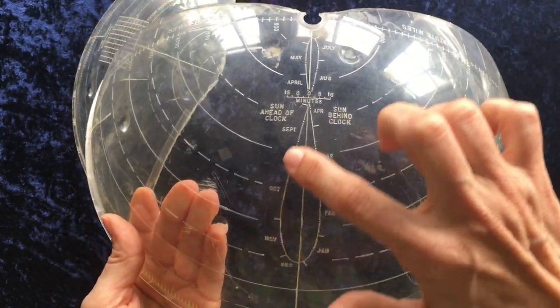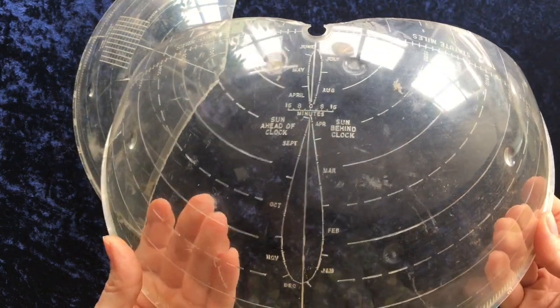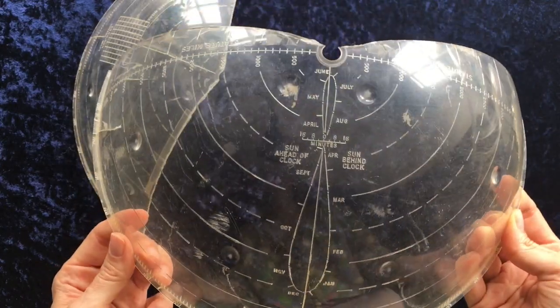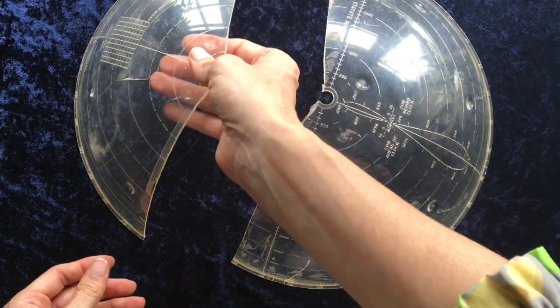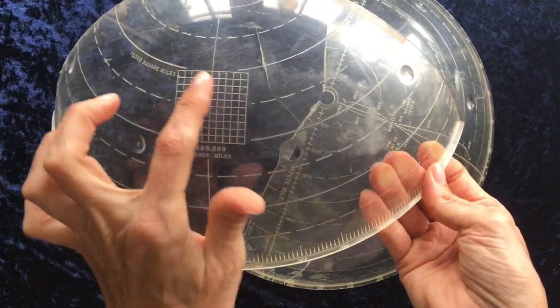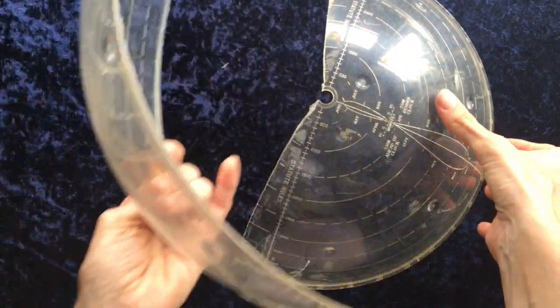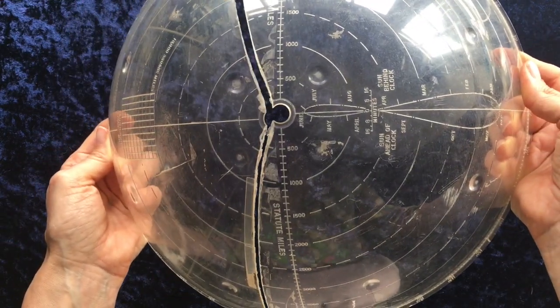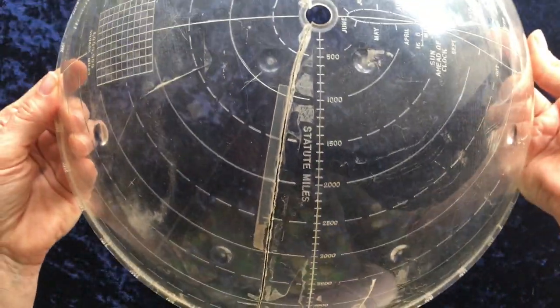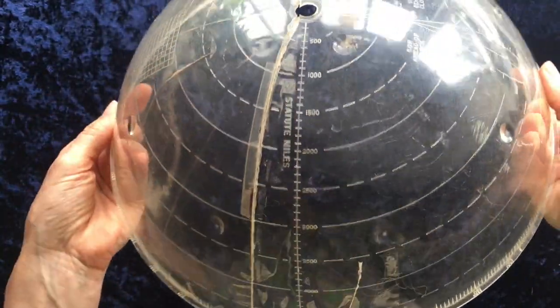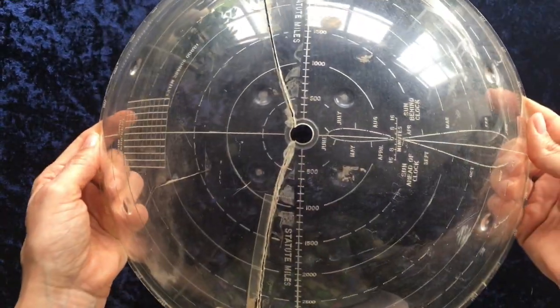So here we have the sun pattern that the sun would make at the same time every day throughout the year. So here we have the elliptical pattern as the earth moves around the sun. There's square miles, and of course more latitude readings in degrees. So this you would be able to put over top of the globe and get your latitude, statute miles, and position of the sun on the globe.